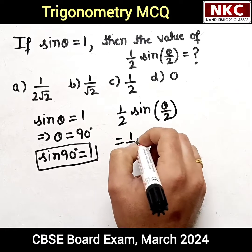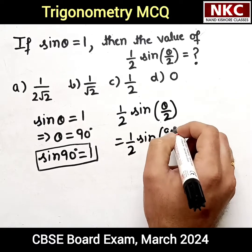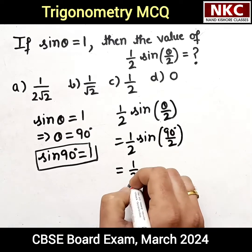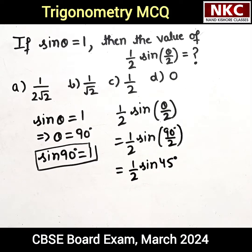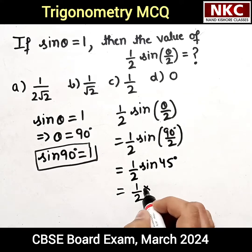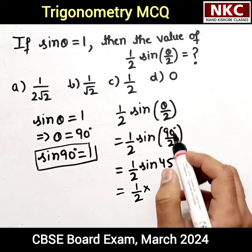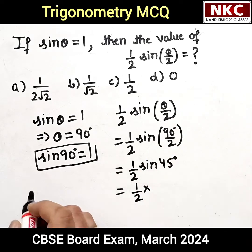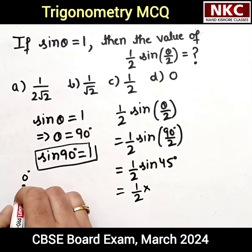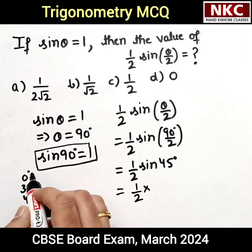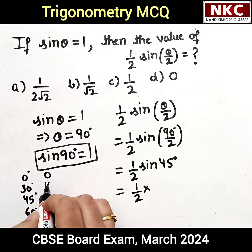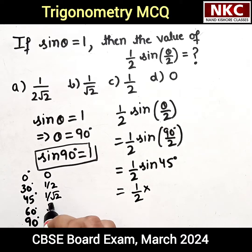We have already found that θ is 90°. So θ/2 means 90 divided by 2, which gives us 45°. Now what is the value of sin 45°? We should know this from the trigonometric table. The five angles we learn are 0°, 30°, 45°, 60°, and 90°. Their sine values are: sin 0° = 0, sin 30° = 1/2, sin 45° = 1/√2, sin 60° = √3/2, and sin 90° = 1.